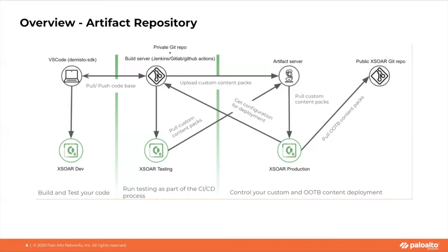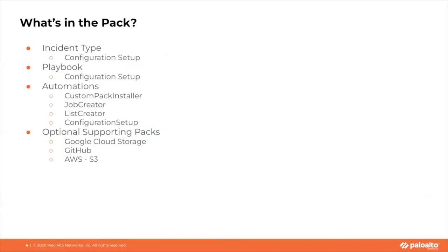By using these standard development tools, XOR content can be linted, validated, and deployed to artifact servers. The automations that are included in this content pack allow for the installation of custom content from artifact repositories such as AWS S3 and Google Cloud Storage.